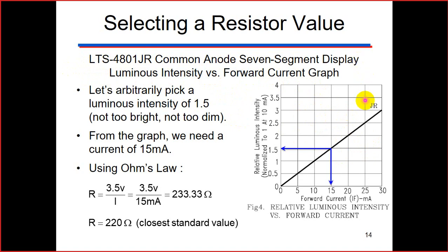From the data sheet curve, if we arbitrarily pick a luminous intensity of 1.5, we need a forward current of 15 mA. Using Ohm's Law: R = 3.5 V / 15 mA = 233.33 ohms. The closest standard value available in the market is 220 ohms. So that is how you calculate the resistor value to get the right brightness for your seven segment display.